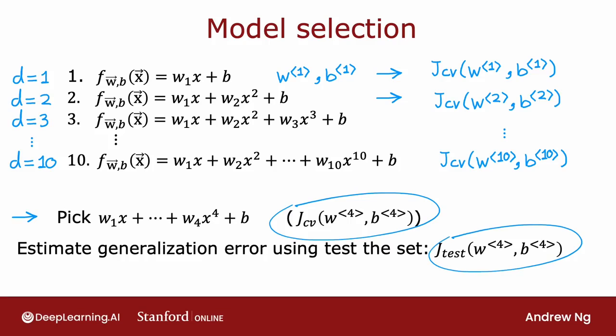Throughout this entire procedure, you fit the parameters using the training set. You then chose the parameter d—the degree of polynomial—using the cross-validation set. Up until this point, you have not fit any parameters—either w, b, or d—to the test set.